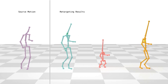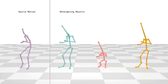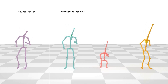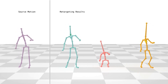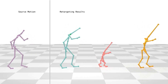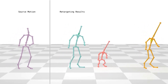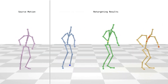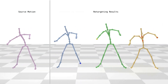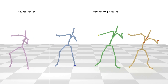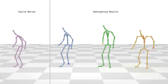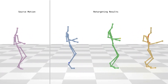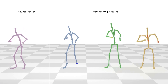Once our autoencoder is learned, we can immediately retarget source motion to arbitrary target skeletons by simply decoding it with different target skeletons. Our autoencoder can address not only size or body proportions, but also topology difference features highlighted in the video. For example, the second character has no left toes, while the third and fourth character do not have one hand, and the fourth character also has additional spine and neck joints.